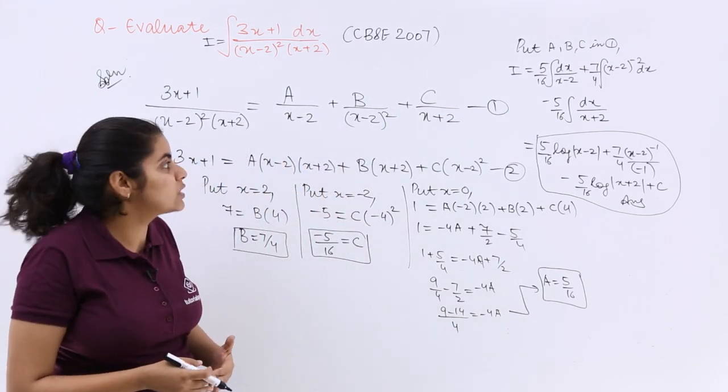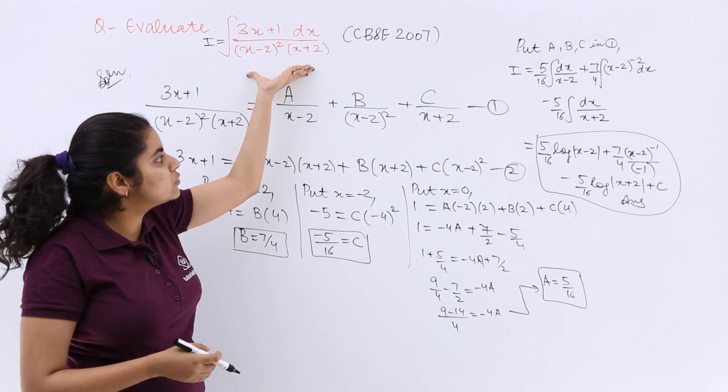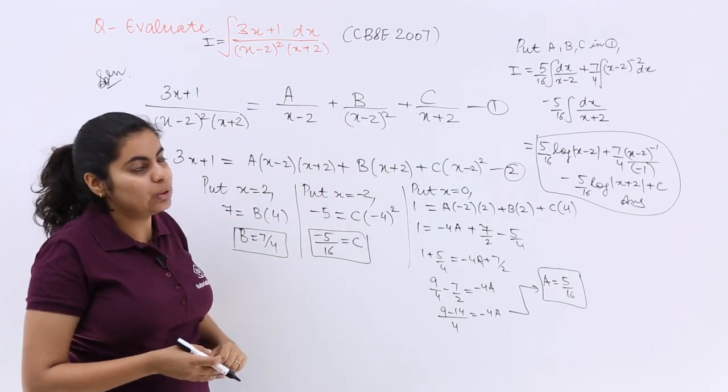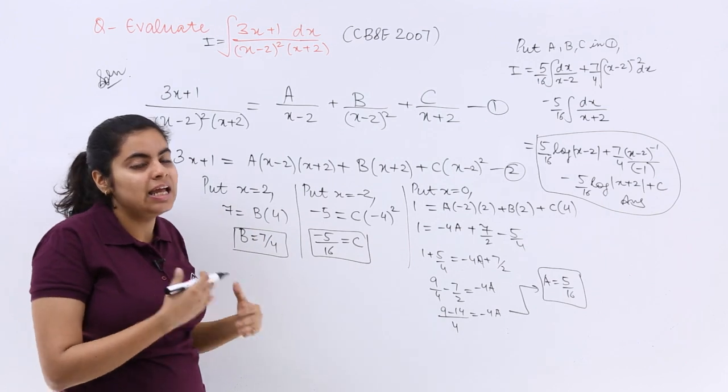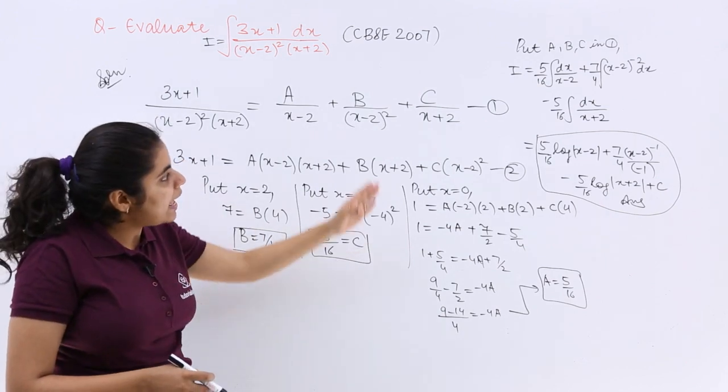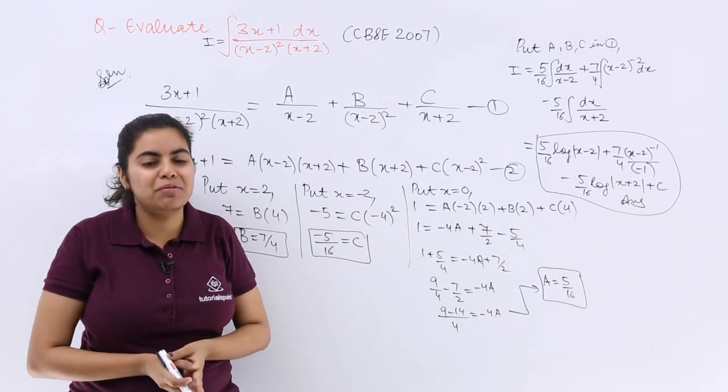As you can see how we did this question, we basically saw which format would be suitable. According to that format I wrote, then I found out the values of B, C, and A in any order you can find out, and then I used it for my final answer.